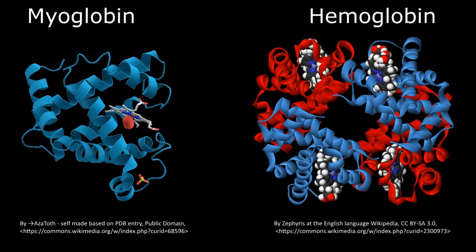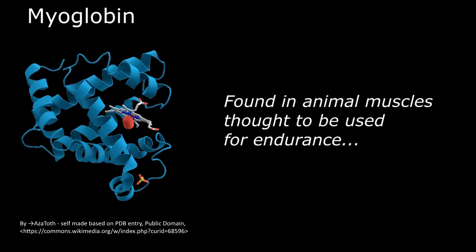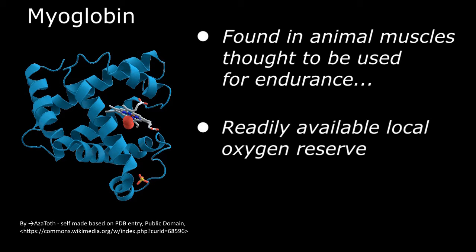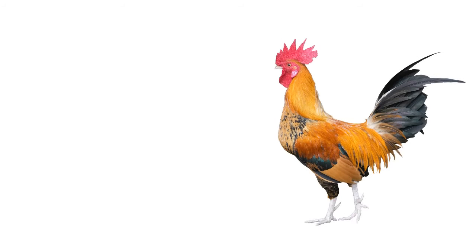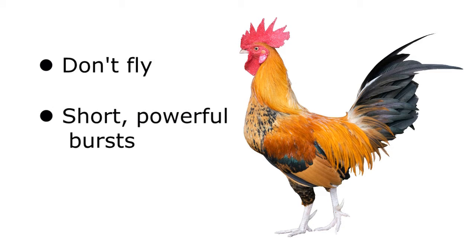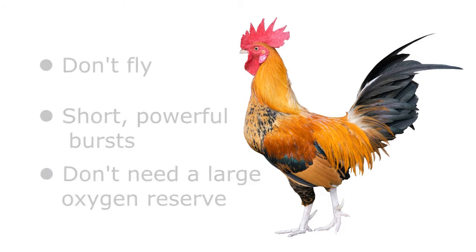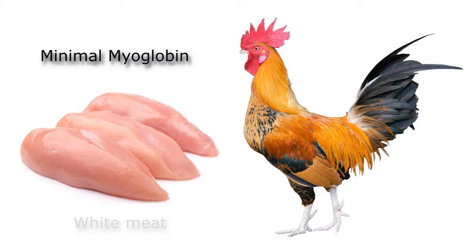Similar to hemoglobin — with a protein globin surrounding an iron-containing heme molecule — myoglobin is found in animal muscles thought to be used for endurance. Myoglobin stores a readily available local source of oxygen to keep the muscles working normally during extended periods of activity. Comparing domestic chickens to wild ducks: chickens don't fly but use their wings for short bursts of lift and therefore don't need an abundant oxygen reserve. Their powerful pectoral muscles contain almost no myoglobin, making them white meat.